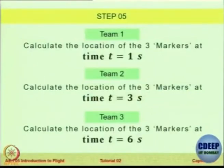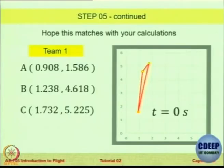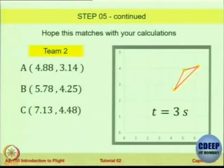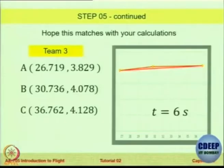We have a quiz ahead so we do not want to spend too much time. Our objective now is to check whether this particular flow is compressible or incompressible. For that we have to be sure that at all these time steps, the same element we are tracking has the same volume. Do we think the volume of this triangle at t equals 1, 3, and 6 seconds and the initial triangle is the same? Visually it is difficult to tell — we need to check.